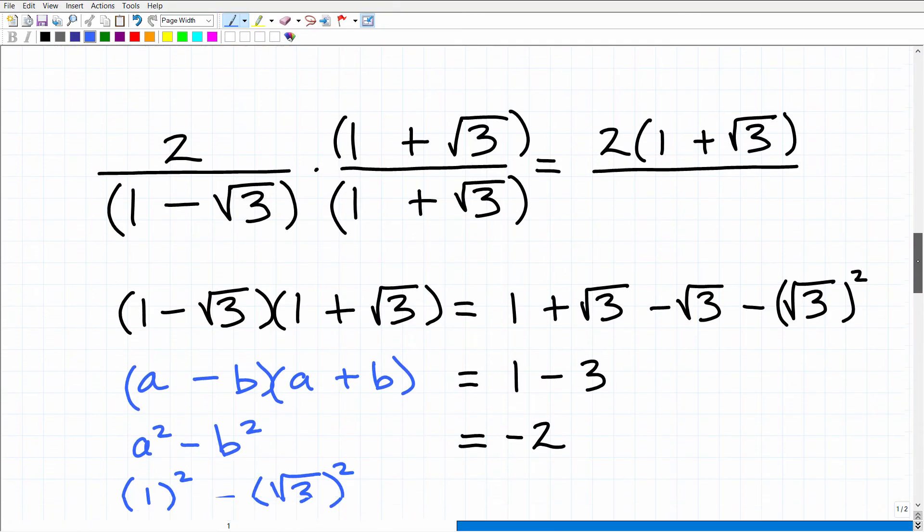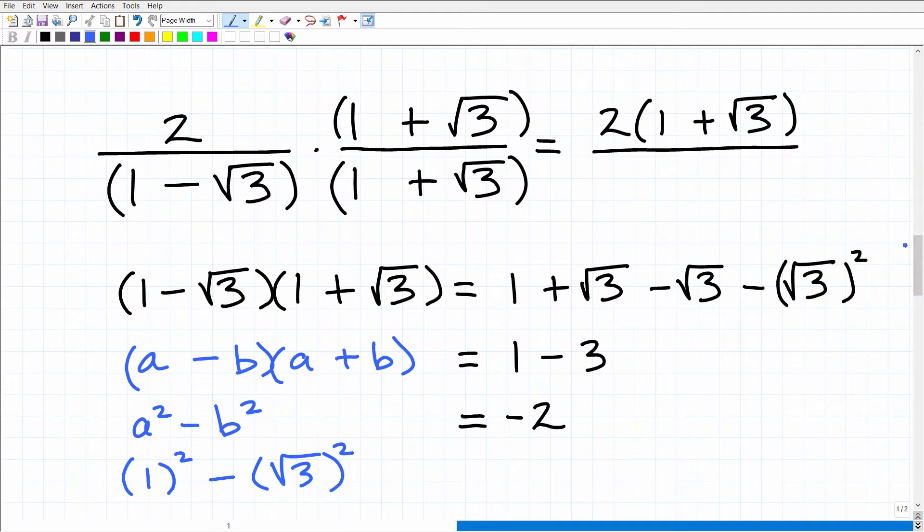So the first thing is we'll go ahead and take this 2 and we'll multiply it by the numerator. So that would be 2 times 1 plus the square root of 3. And then I'll come back here and clean this up in a second. But let's take a look at this right here. So, again, I'm going to use the FOIL method: first, outer, inner, last.